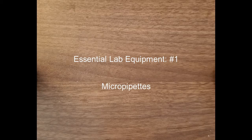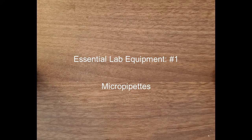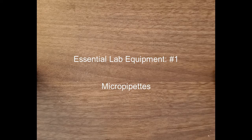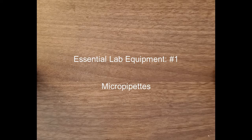One of the biochemist's most important tools is the micropipette. There are a bunch of different types of these, and basically they allow you to transfer different volumes — usually pretty small volumes — of your reagents to do your biochemical reactions.